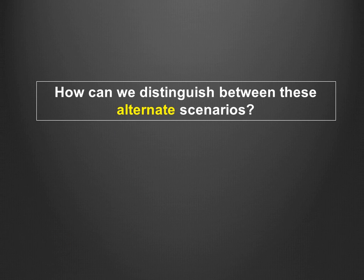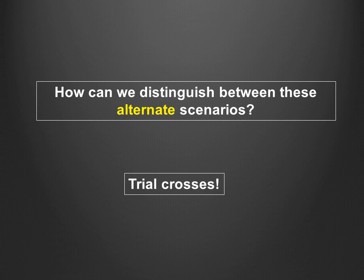To distinguish between these two scenarios, we can perform trial crosses — crosses by mating any two individuals. This is what you will be doing virtually. To perform trial crosses, there are really only two general paths to take: you could cross individuals with the same phenotype, or individuals with different phenotypes. We will go through these two types of crosses systematically.